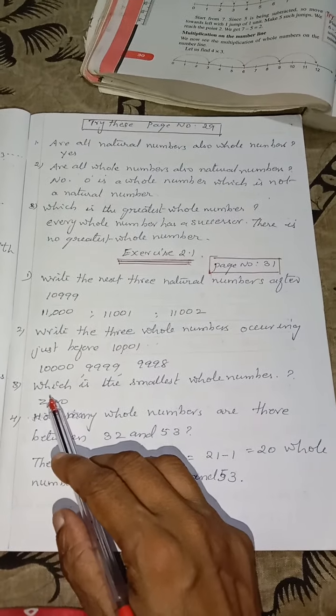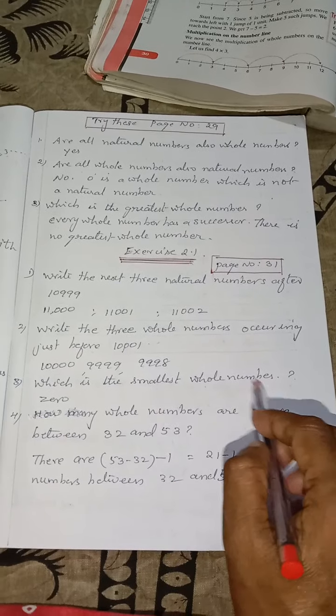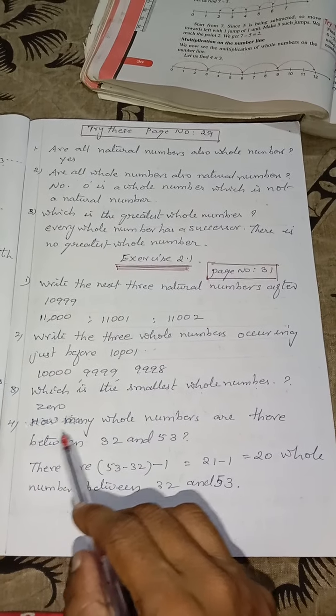Then 3rd one. Which is the smallest whole number? 0. And 4th one.